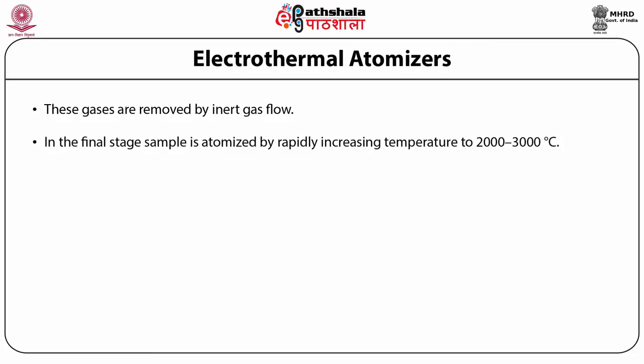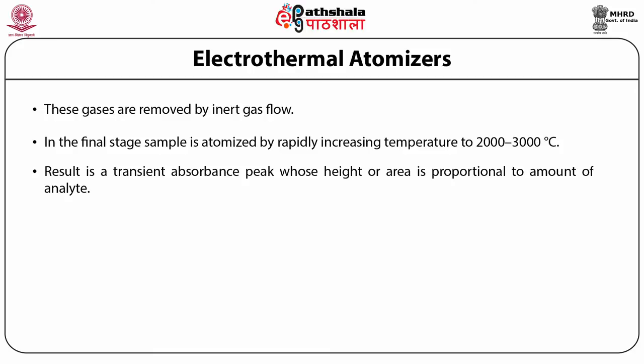In the final stage, the sample is atomized by rapidly increasing the temperature to 2000 to 3000°C. The result is a transient absorbance peak whose height or area is proportional to the absolute amount of analyte injected into the graphite tube. The three stages are complete in approximately 45 to 90 seconds, with most of this time used for drying and ashing the sample.